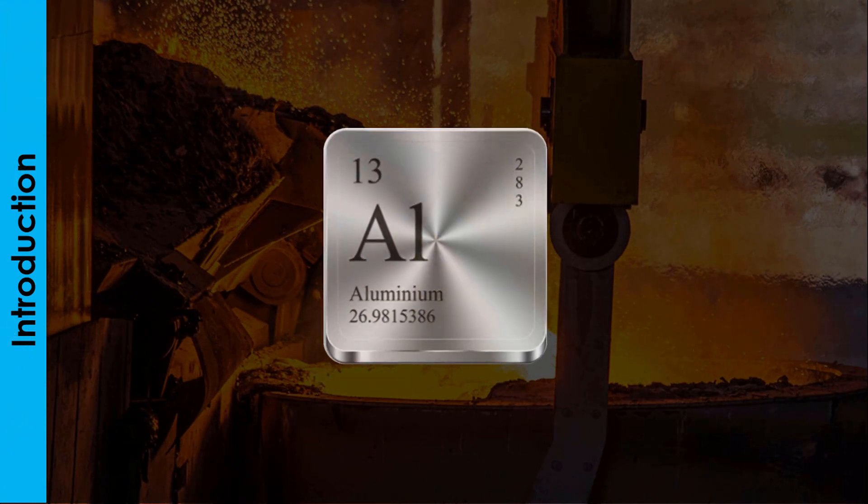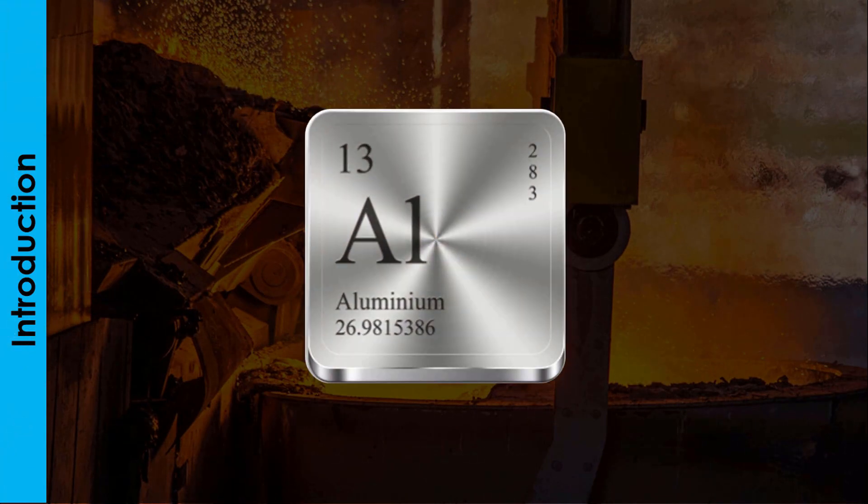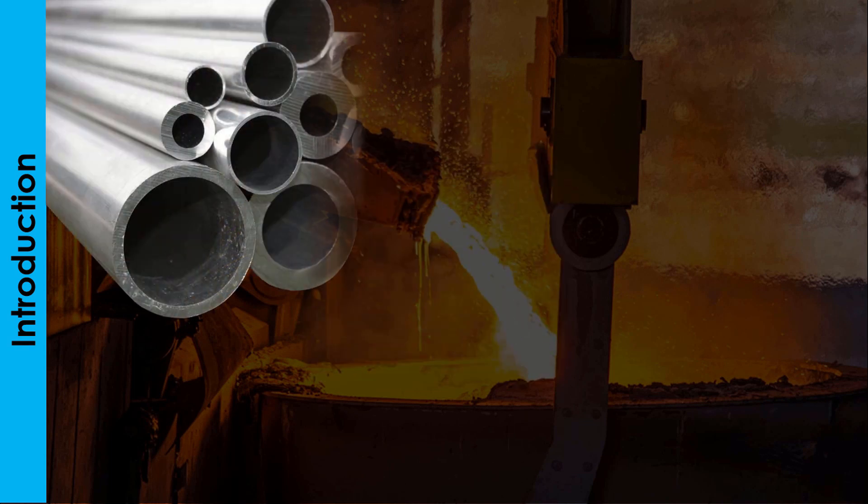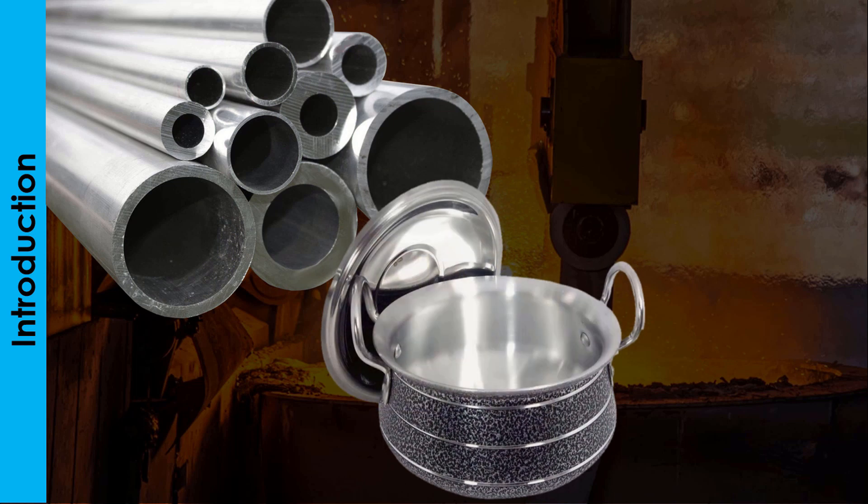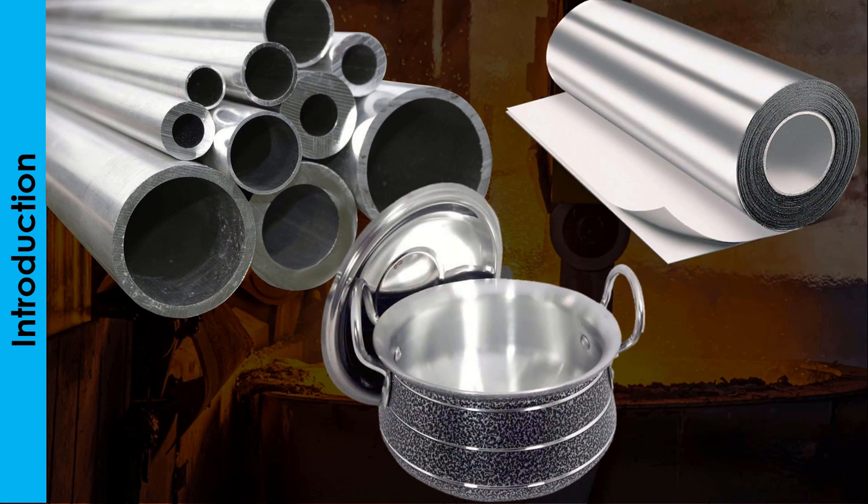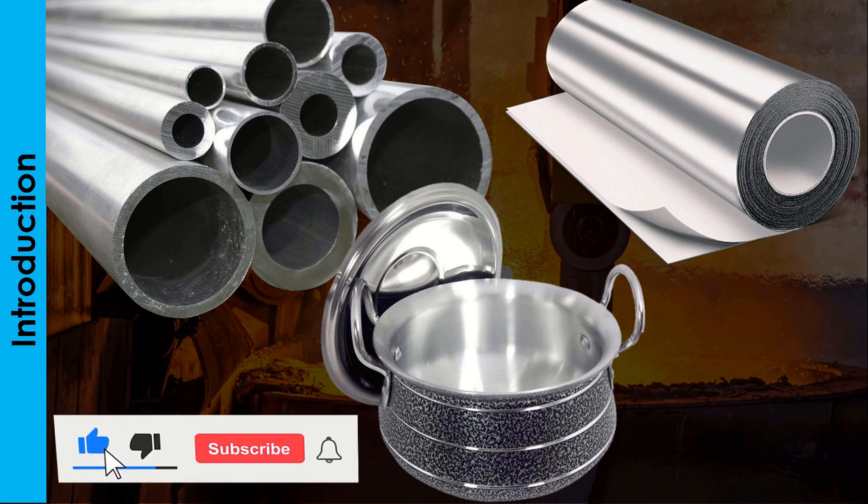Aluminium is the third most abundant element and the most abundant metal found on the Earth's crust. Just like iron, it has wide industrial applications. In our subsequent videos, we will look at the properties and uses of aluminum in detail.